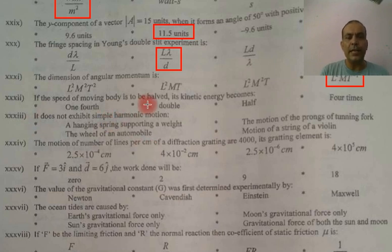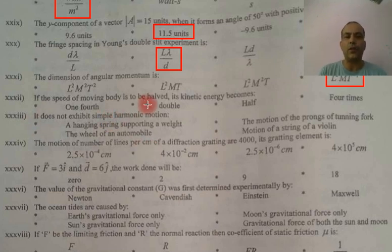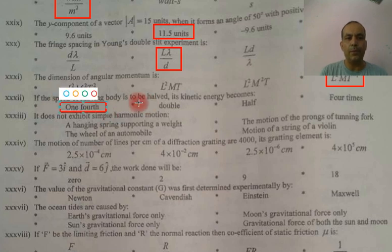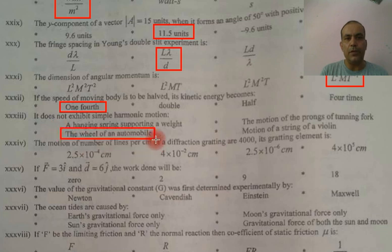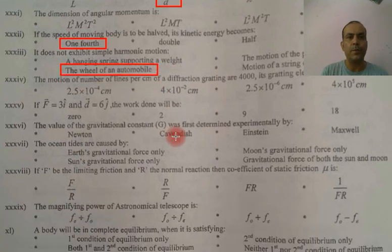The speed of a moving body is halved, so the kinetic energy becomes one-half squared, which is one-fourth. Regarding what does not exhibit simple harmonic motion — the wheel of an automobile does not exhibit simple harmonic motion.